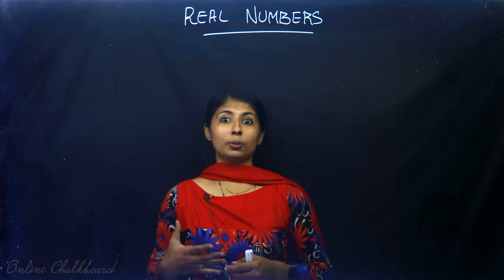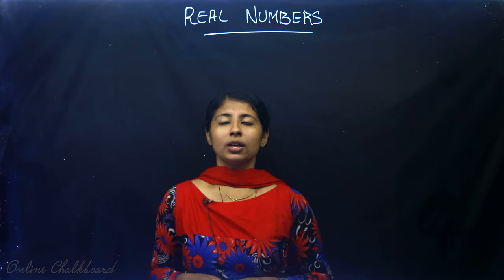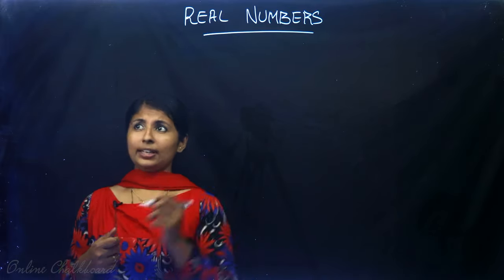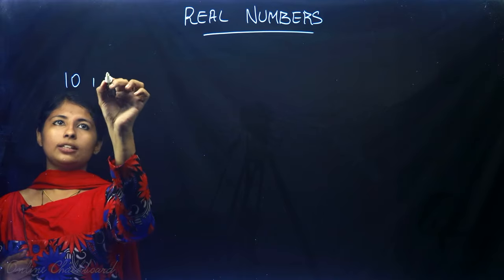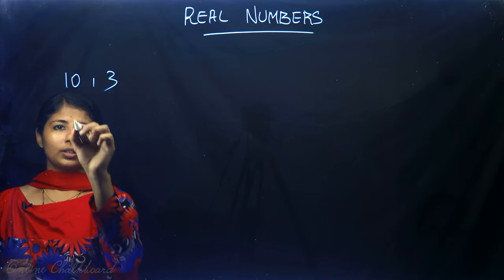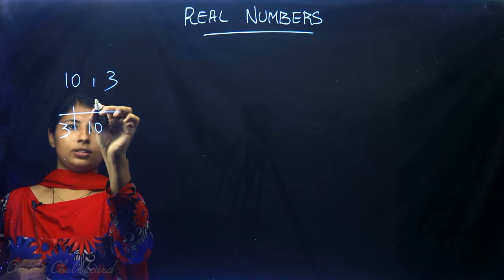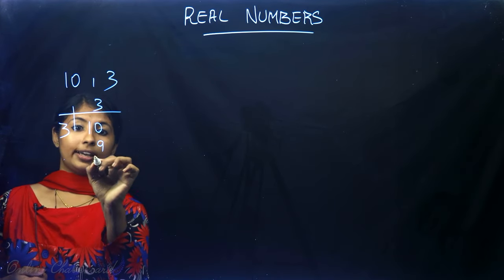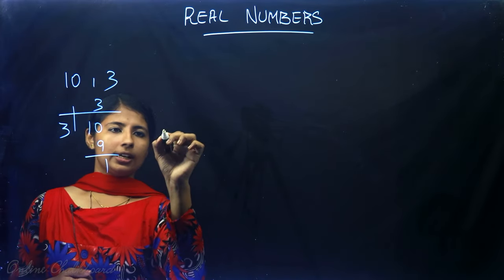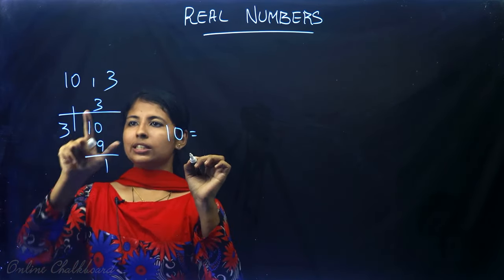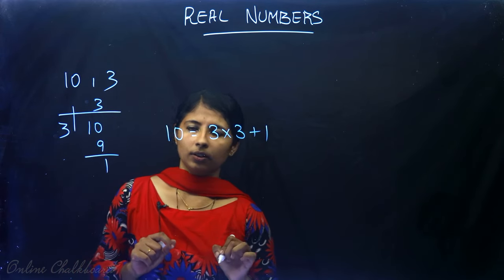This name might be confusing, but it's actually very simple. Suppose you are asked to divide 10 by 3. 10 divided by 3: three 3's are 9, remainder 1. So I can write 10 = 3 × 3 + 1. That's one example.